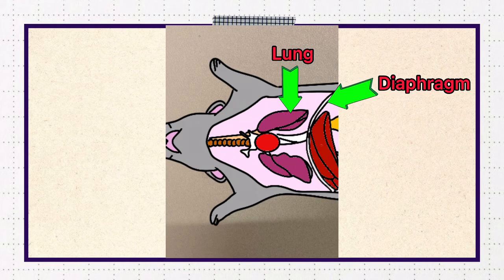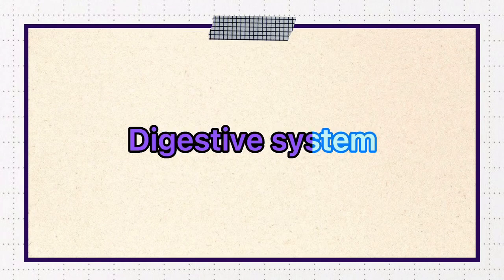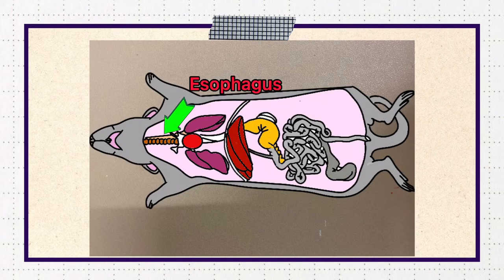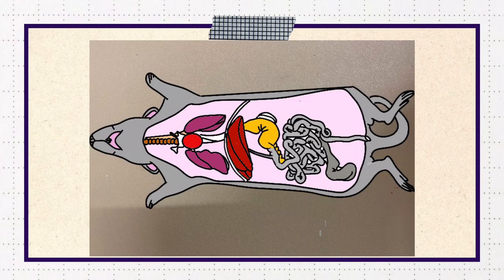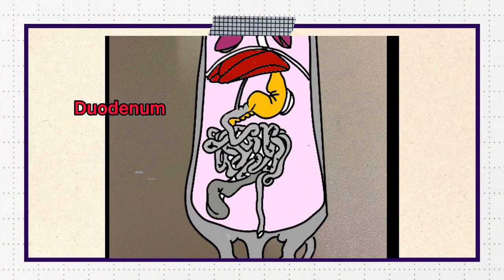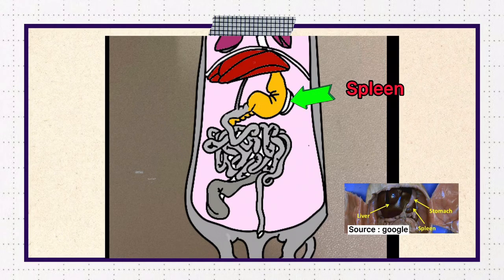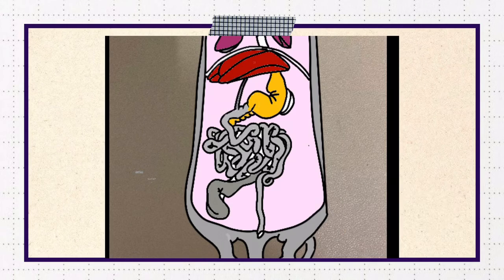Moving to the digestive system, there is the esophagus which runs through the diaphragm and moves food from the mouth to the stomach, the bile duct which carries bile from the liver and the gallbladder to the duodenum, the stomach on the right side just under the liver, and the spleen which is about the same color as the liver and is attached to the greater curvature of the stomach.